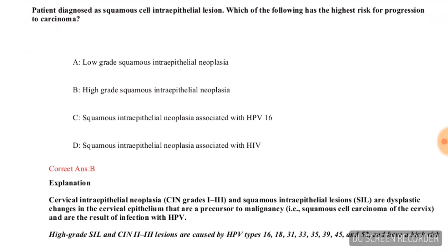A patient diagnosed with squamous cell intraepithelial lesion — which of the following has the highest risk of progression to carcinoma? Options are low-grade squamous intraepithelial neoplasia, high-grade squamous intraepithelial neoplasia, squamous intraepithelial neoplasia associated with HPV 16, or squamous intraepithelial neoplasia associated with HIV. The correct answer is option B — high-grade squamous intraepithelial neoplasia.